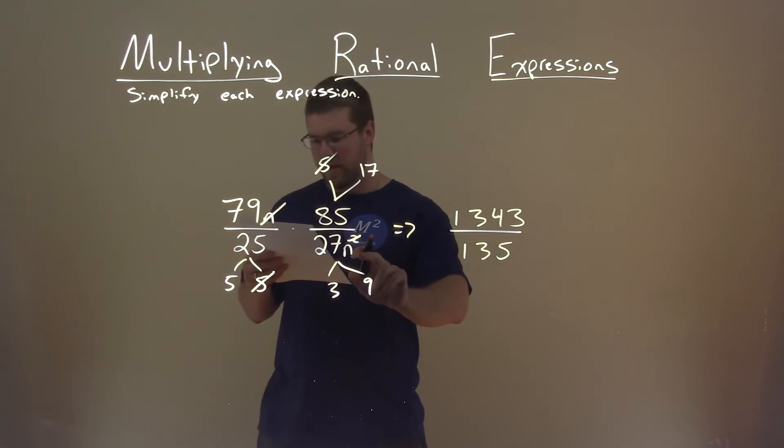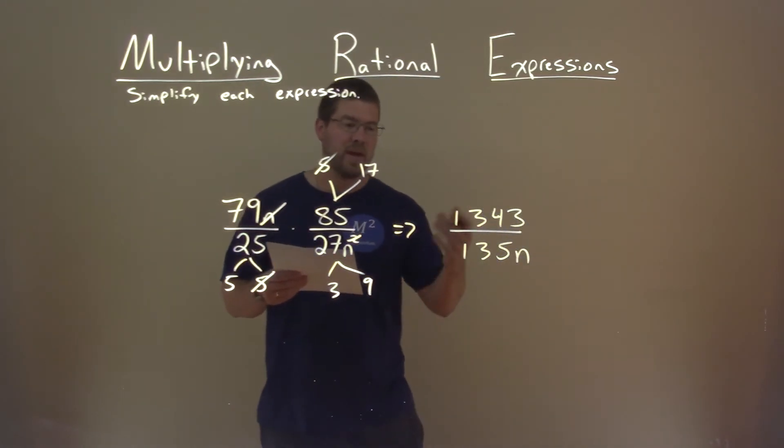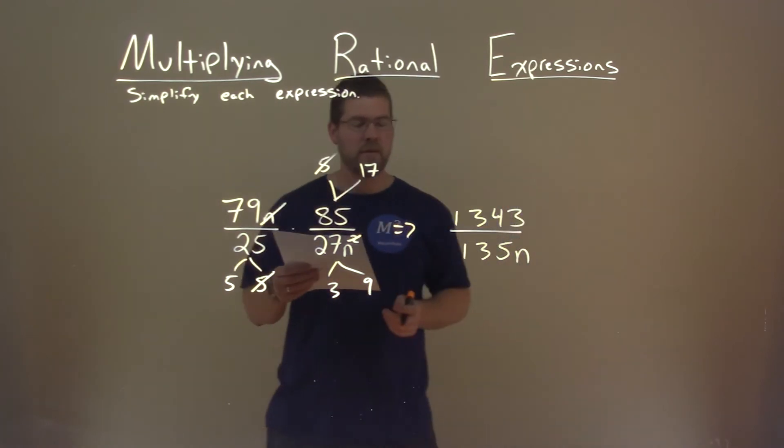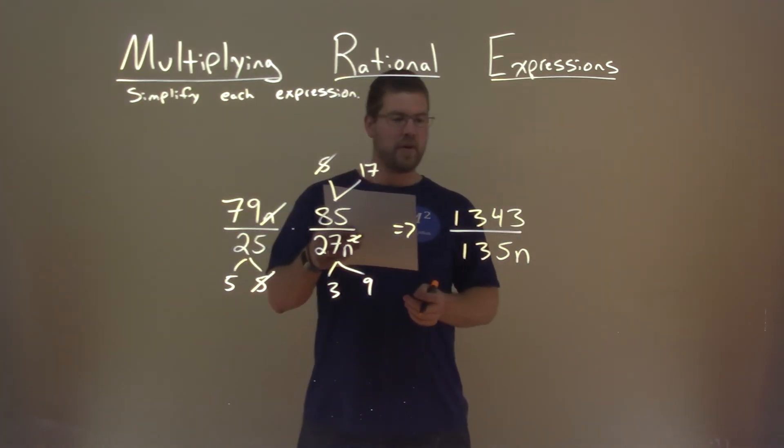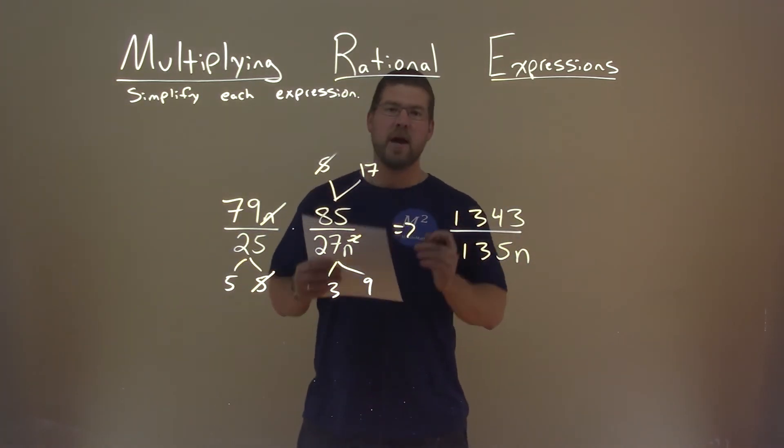Don't forget that n. And there we actually have our final answer. 1,343 divided by 135n.